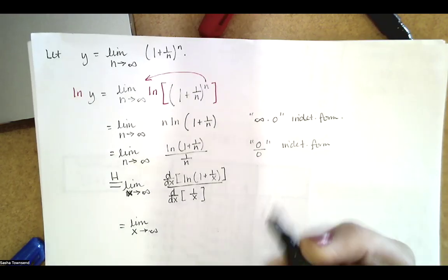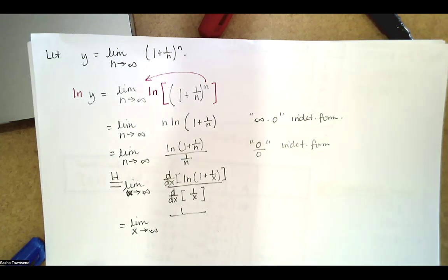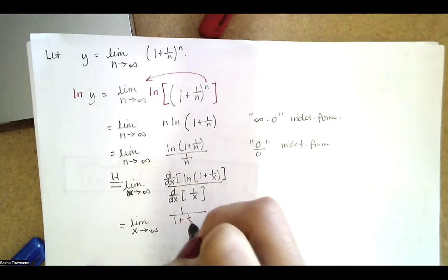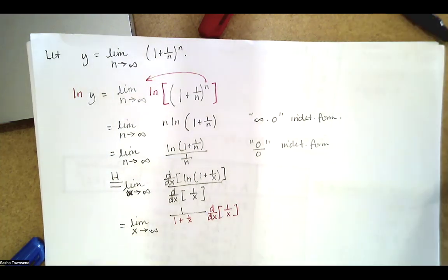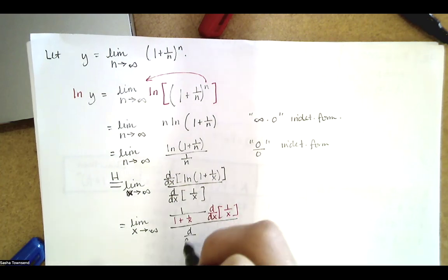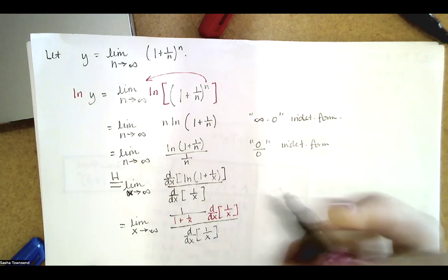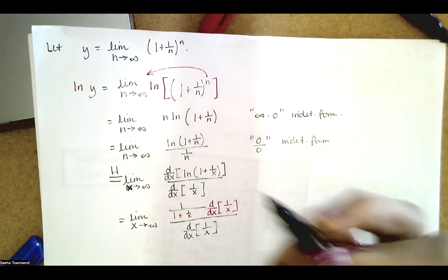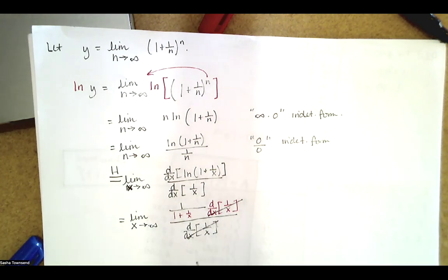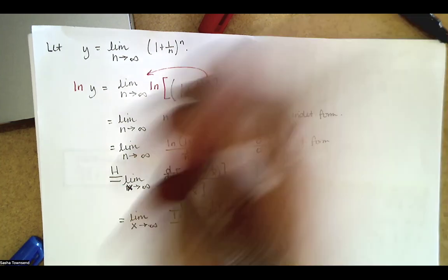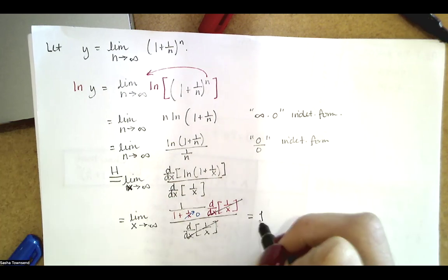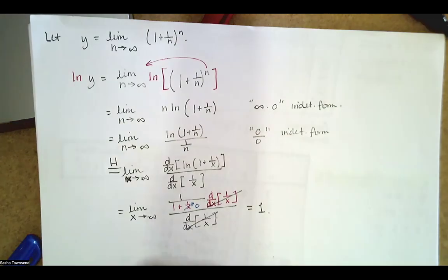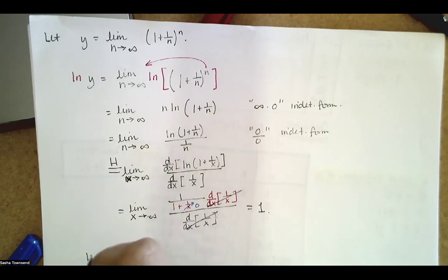Applying L'Hôpital's rule, we take the derivative of the numerator — the natural log of (one plus one over x) — which equals one divided by (one plus one over x) times the derivative of one over x by the chain rule. The derivative of the denominator (one over x) cancels as a factor of the numerator. As x goes to infinity, one over x goes to zero, and the expression approaches one.